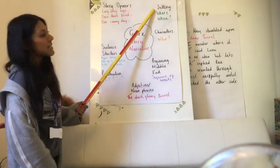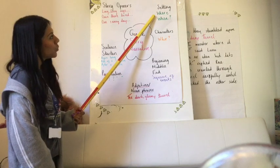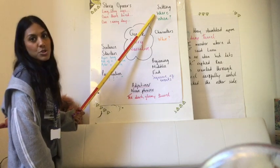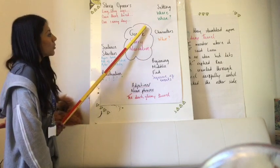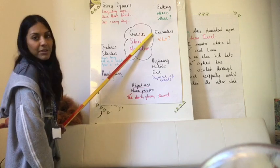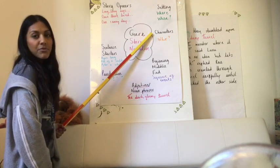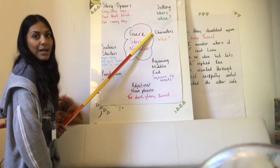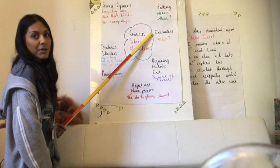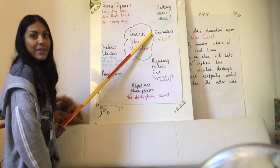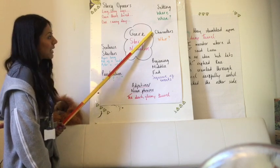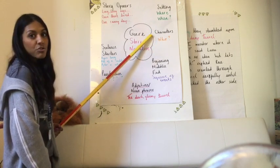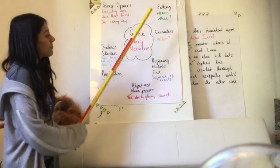Then I want you to think about the setting — where does your story take place and when? When you think about the characters, some of you changed your characters, some of you didn't. Some of you kept with Rose and Jack from the original story, and that's okay. If you changed your characters, who are they? Can you describe them?